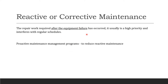Theoretically, reactive maintenance: this repair is required after the equipment failure has occurred. It's usually high cost because you have to fix it right away, and it interferes with all regular schedules. This affects the business negatively. So we don't rely on corrective maintenance. Again, this type of maintenance happens after the equipment failure has already happened. A proactive maintenance management program is another term loosely used to reduce reactive maintenance.